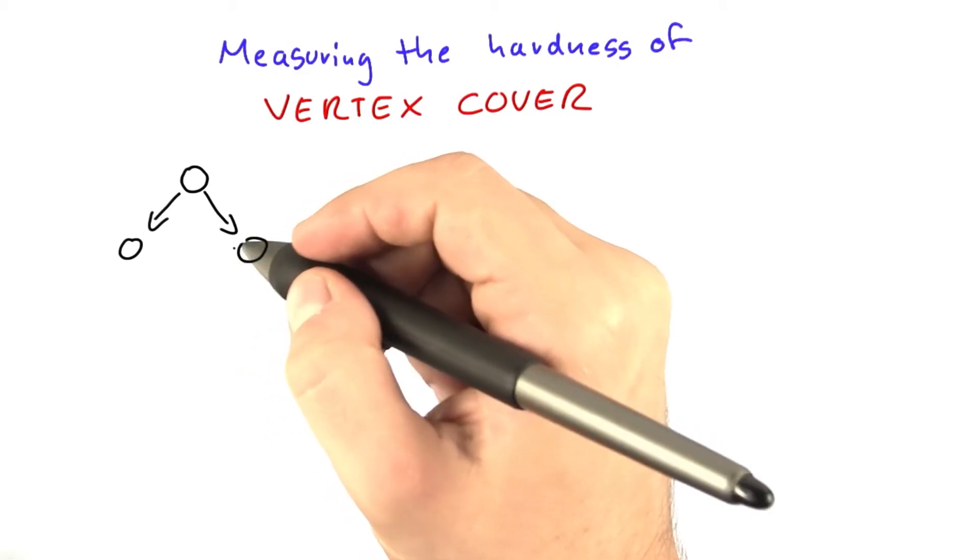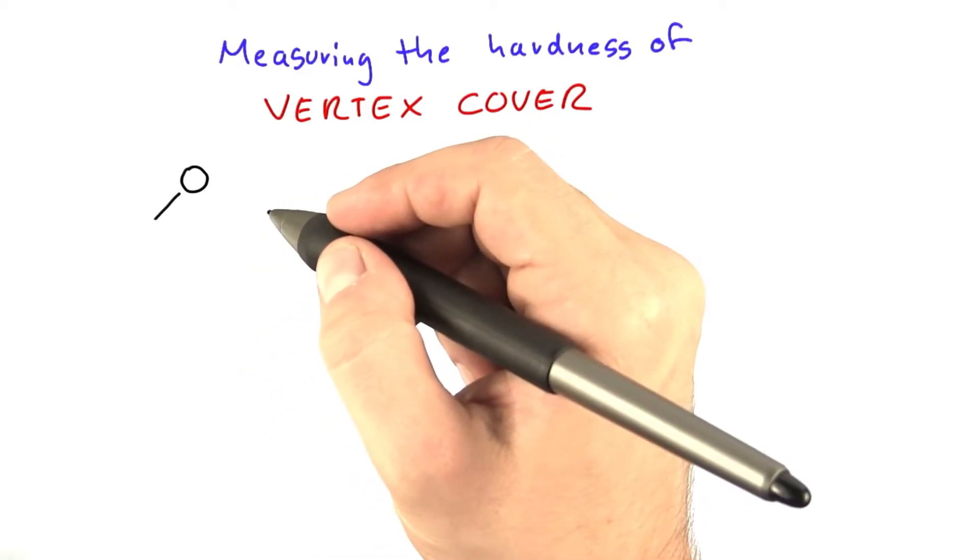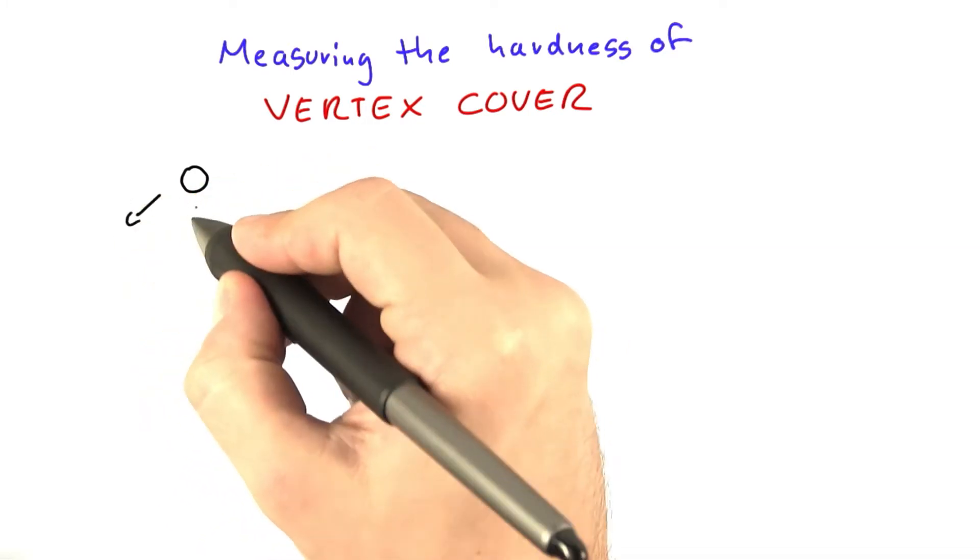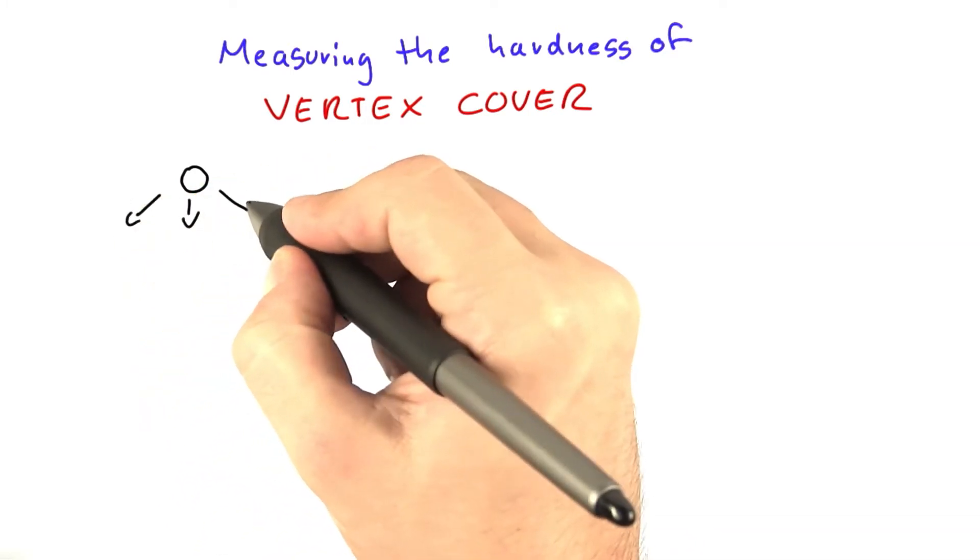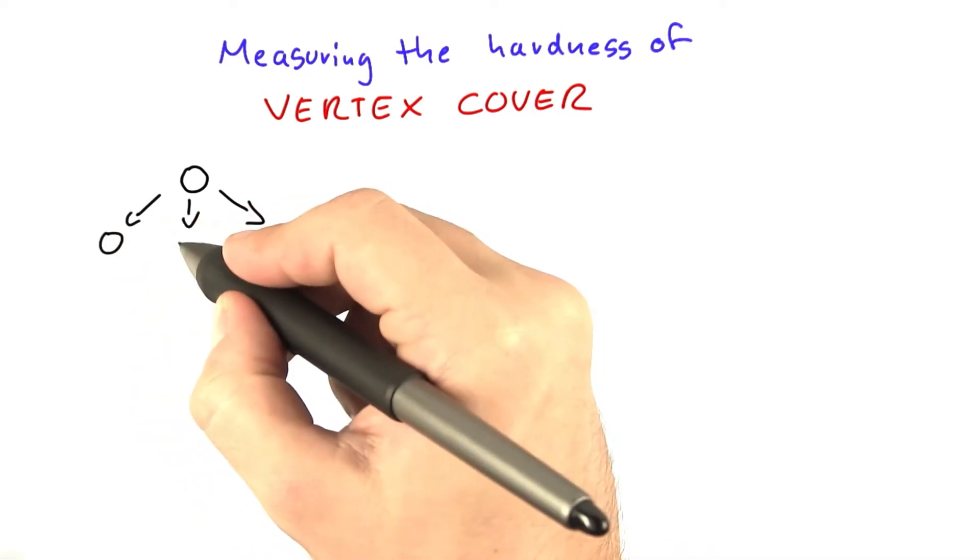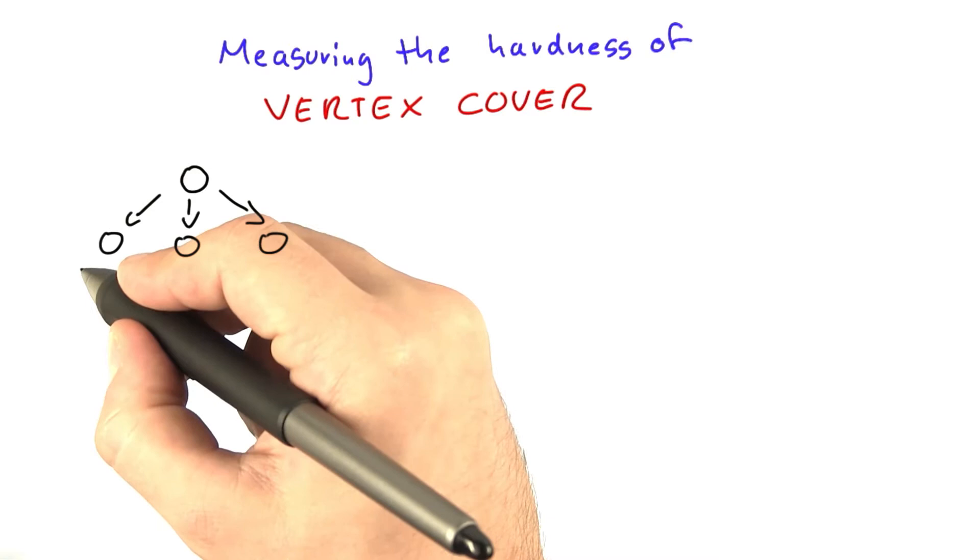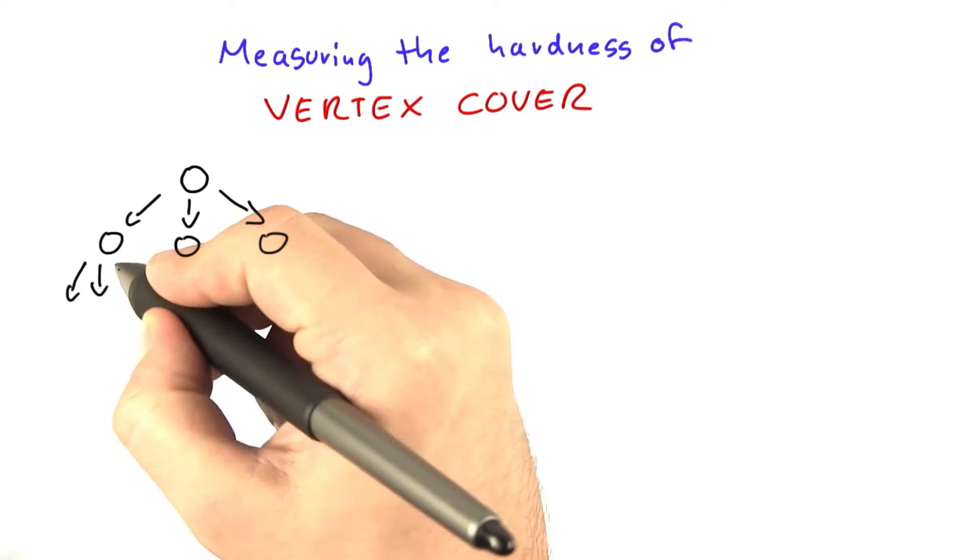And now we already know that we can solve vertex cover using a search tree. So we started with the original graph, and I'm now going to use again the search tree where we branched into only three different possibilities. We know it's not the best possible one, but it will be easier to understand the rest this way, but it also works for the more complicated search trees.